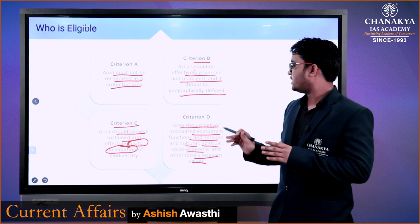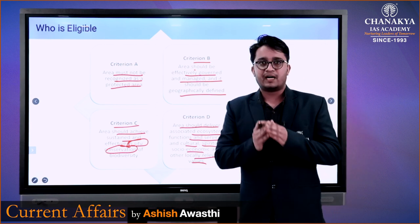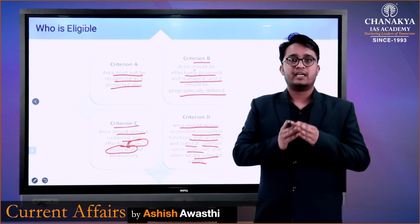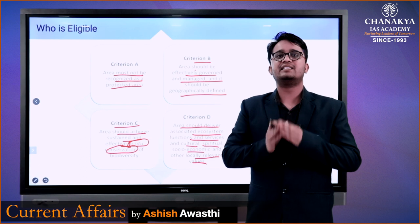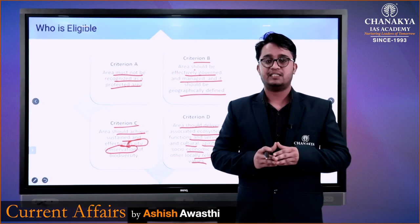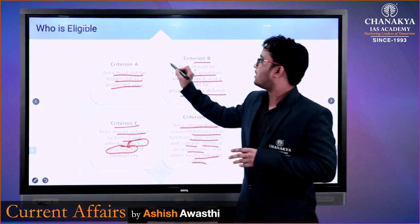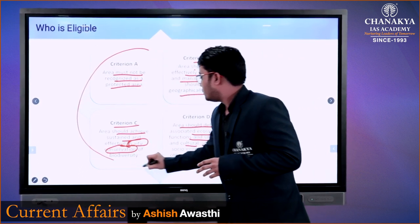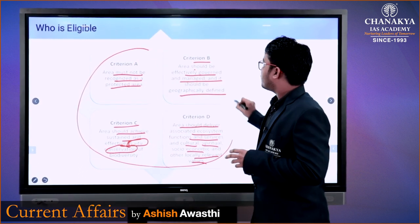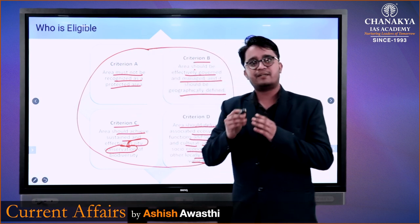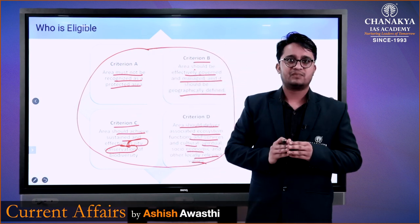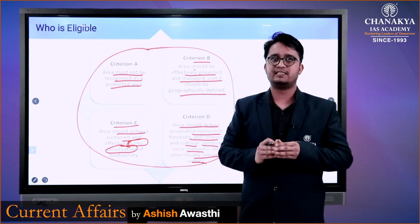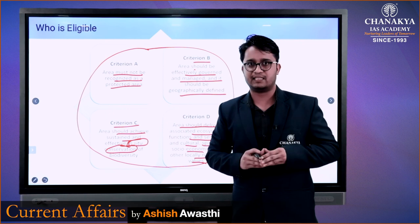चौथा Criteria यह है कि जो भी Area हो, वह वहाँ की संस्कृति को दिखाता हो, उसका आर्थिक महत्त्व हो, और उसका सामाजिक महत्त्व भी होना चाहिए। यदि इन चारों Criteria को देखें, तो ये चारों OECM की Definition में ही दिये गए हैं, और उसी से इन चारों Criteria को आसानी से समझा जा सकता है।